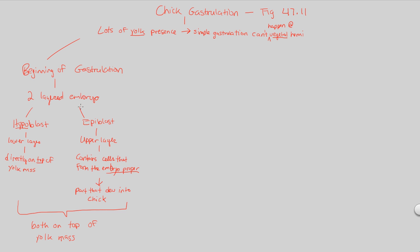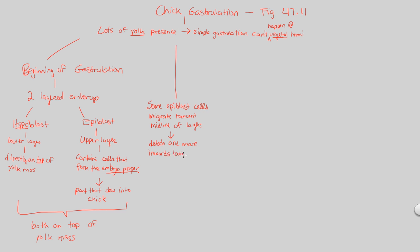Let's look at some specific events now that we have a good understanding of the structure. During gastrulation, some epiblast cells — some of these cells on the top layer — are going to move. That's cell migration, a common characteristic we've seen. They're going to move toward the midline of the layer, basically going towards the middle of this overall structure. As they do this, they will detach and subsequently move inwards towards the yolk, going further and further downward from the top of the epiblast toward the yolk.